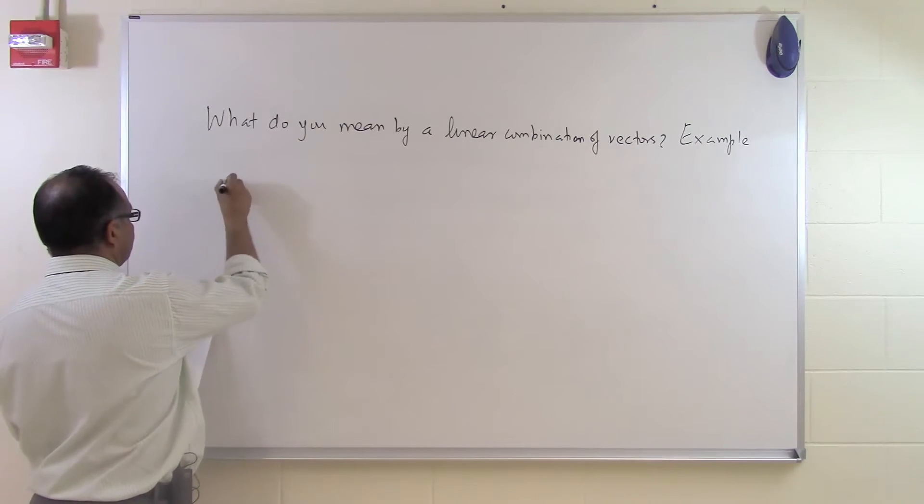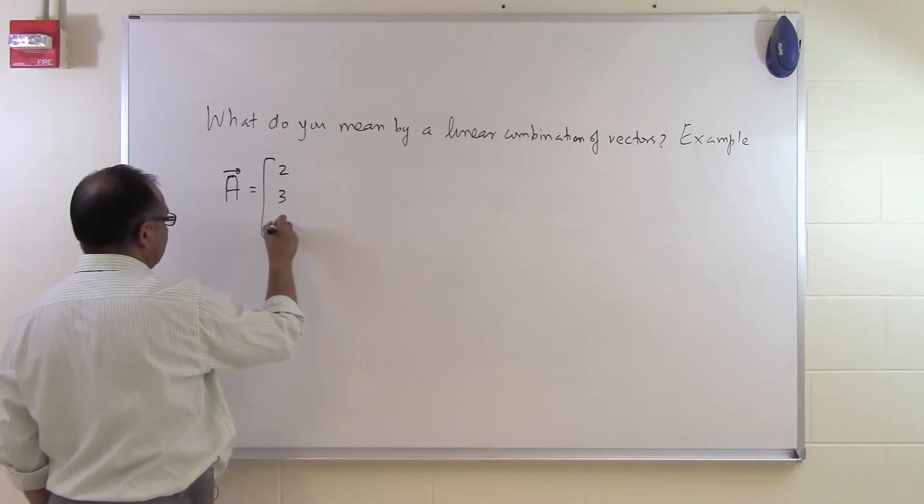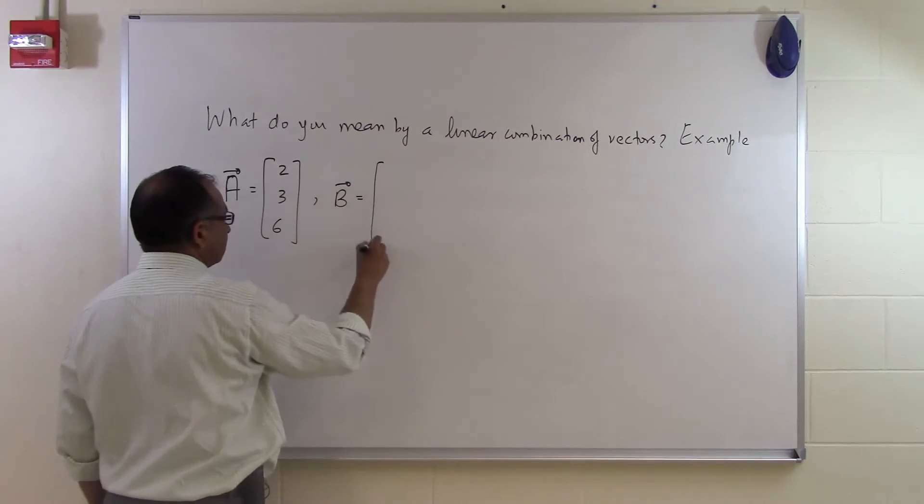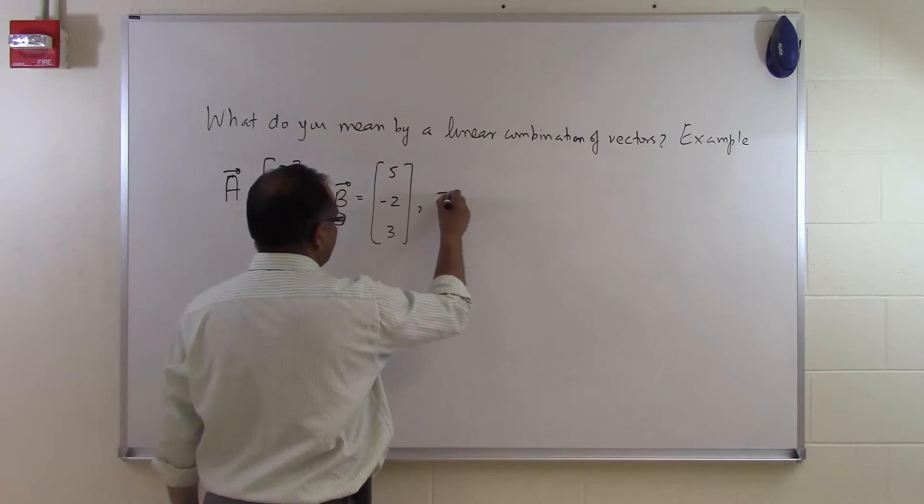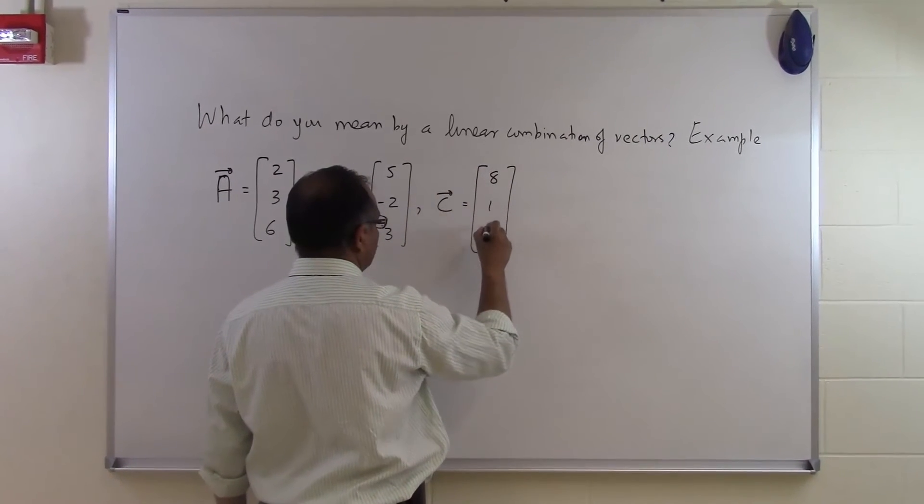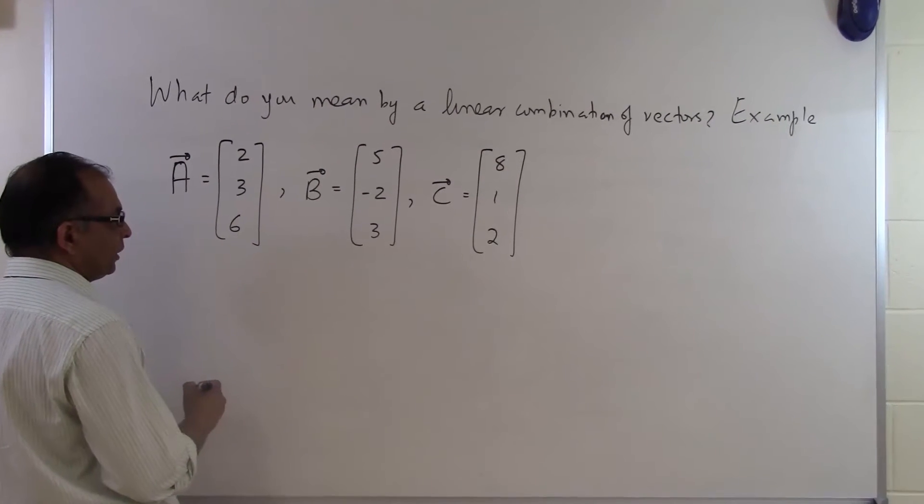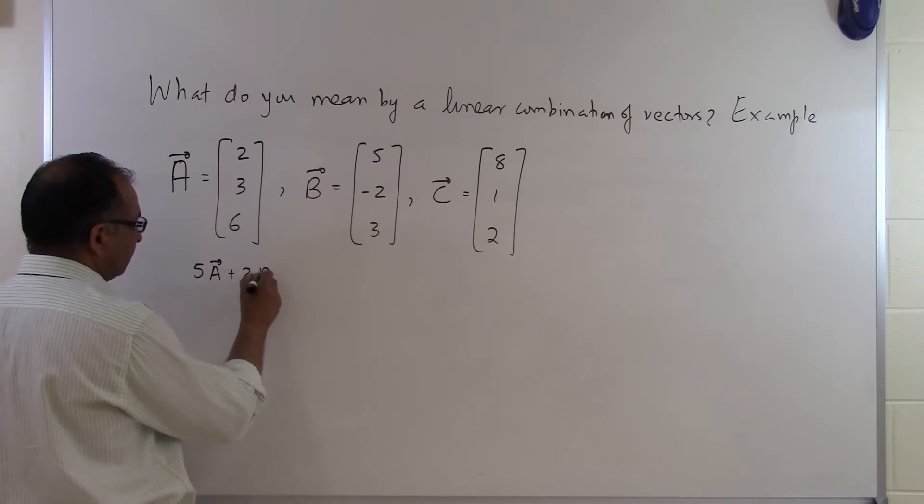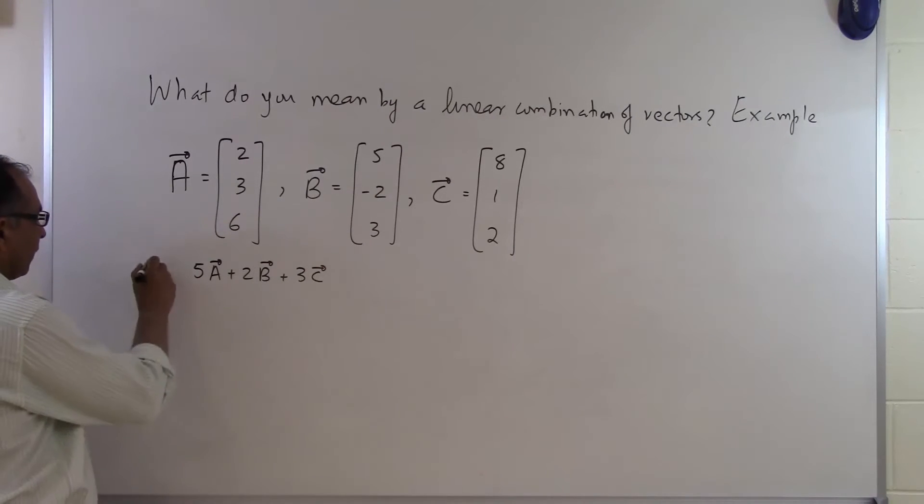you got an A vector which is given to you as 2, 3, 6 and then B vector is given as 5, minus 2, 3 and then you give another vector C let's suppose and that's given as 8, 1, 2. Somebody says hey, can you find the linear combination of these vectors which is 5 times A plus 2 times B plus 3 times C. So find this.